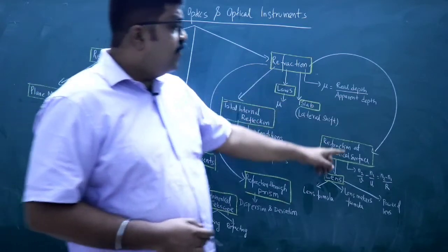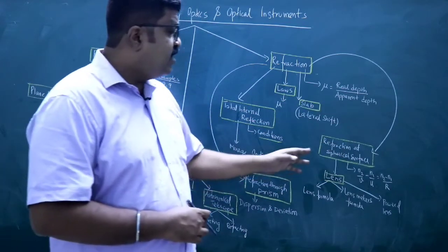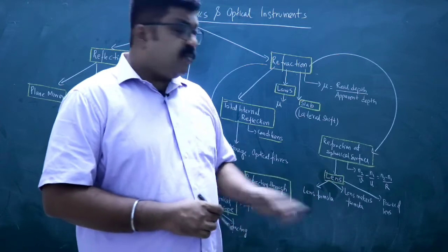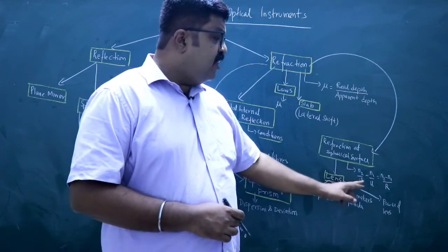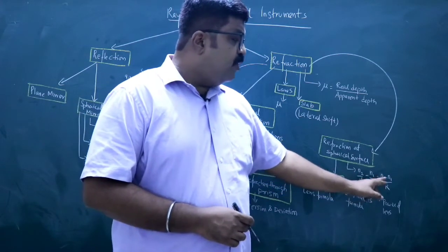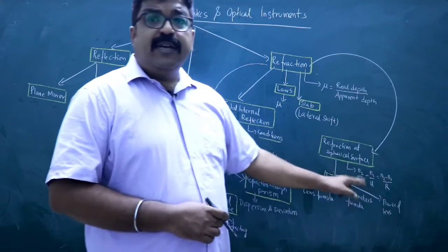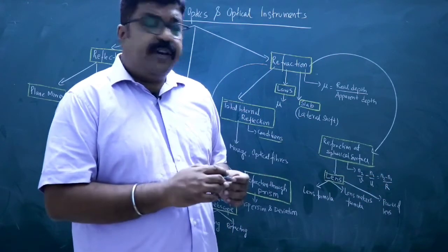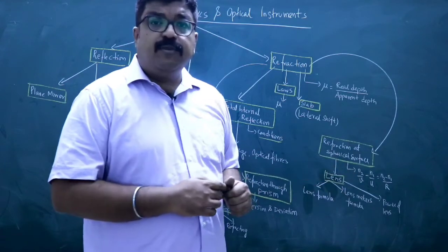Then, Refraction at Spherical Surfaces. This formula is N2 by V minus N1 by U is equal to N2 minus N1 by R. This derivation with proper ray diagram - you must see this derivation.